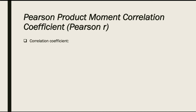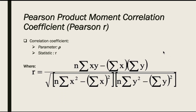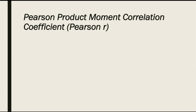We will now go to the correlation coefficient. We have the parameter represented by rho — the Spearman rank order coefficient — and the statistic, which is the Pearson R. The formula shown here is the raw score formula, which can be used for manual computation. However, in this video we're going to use technology — specifically Microsoft Excel and Jamovi — to find the Pearson R.